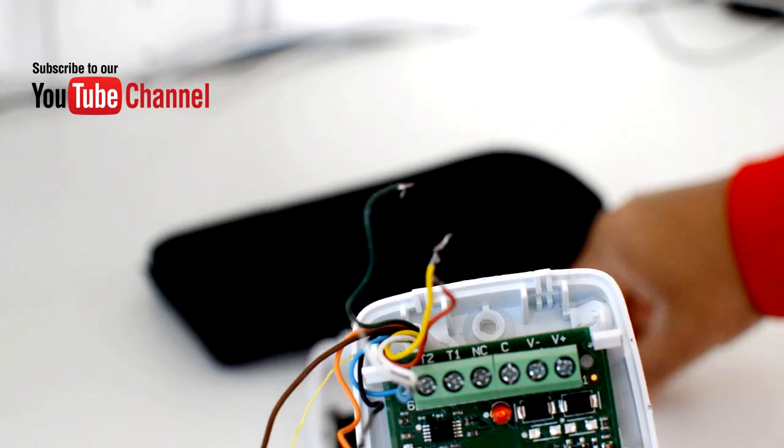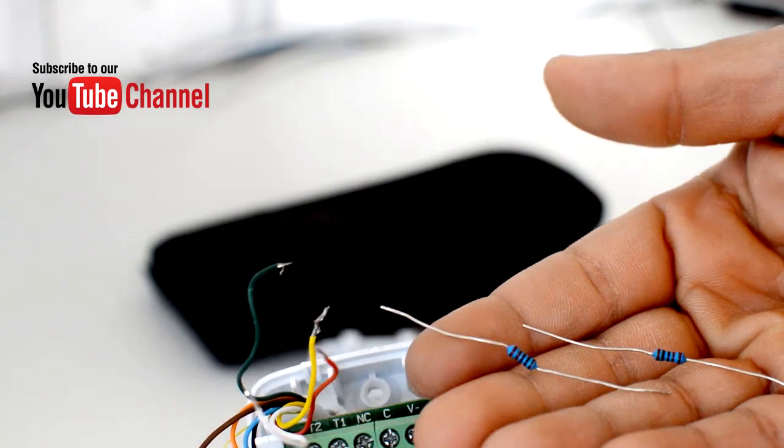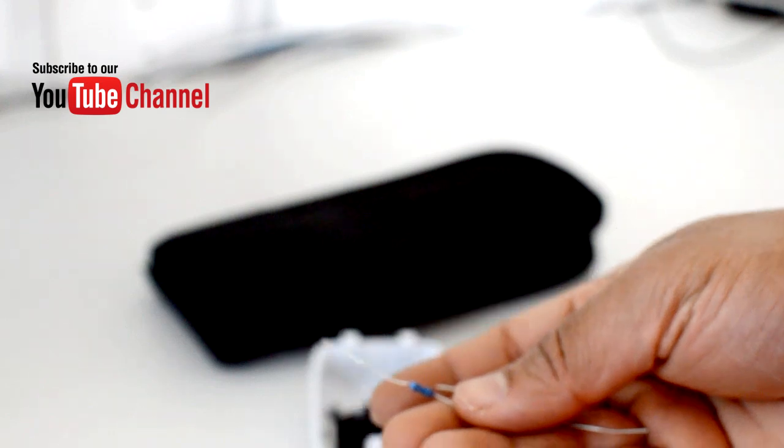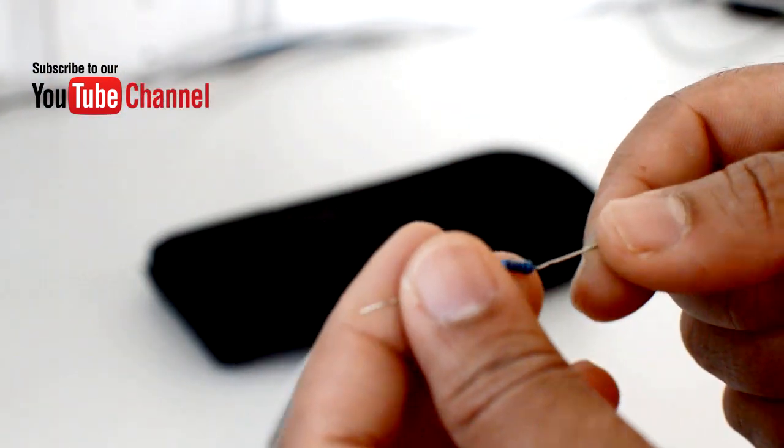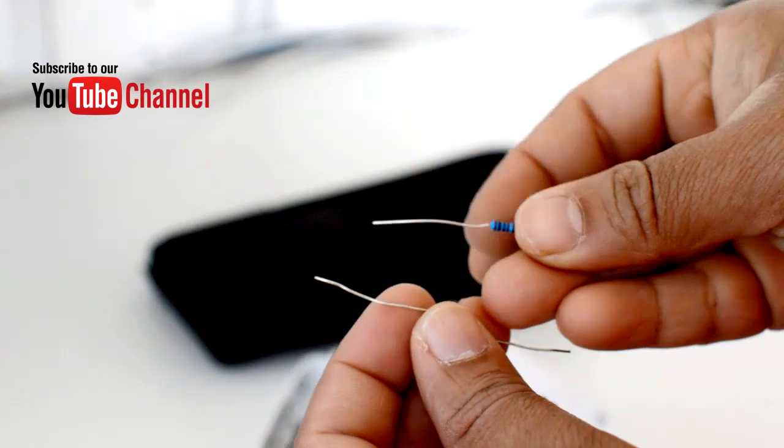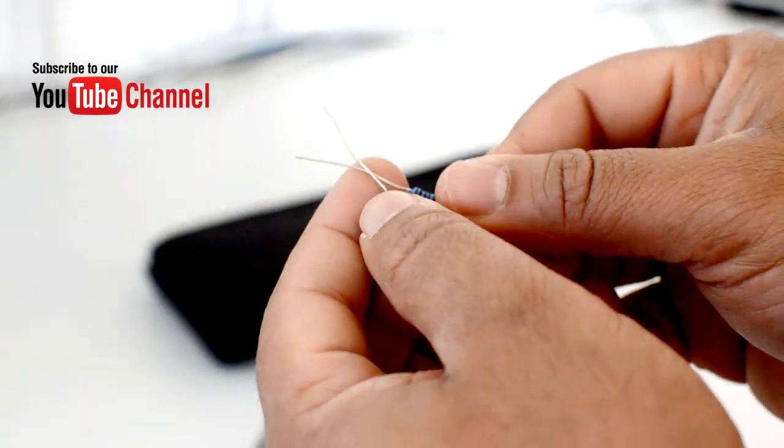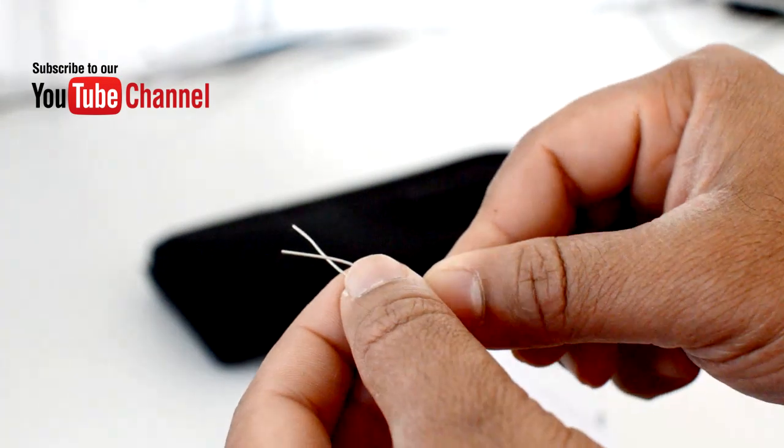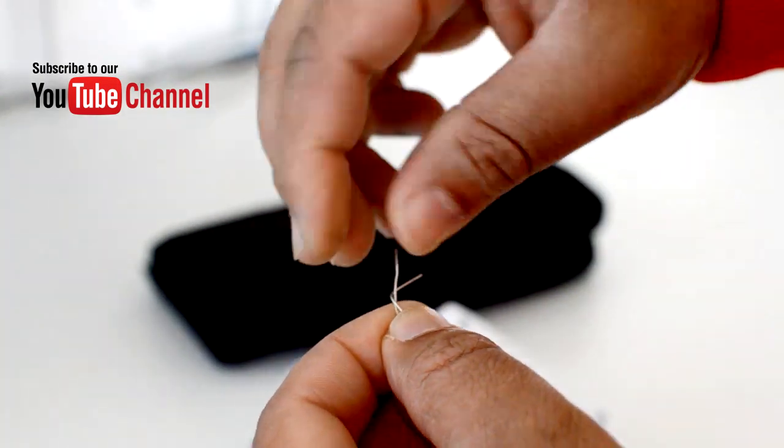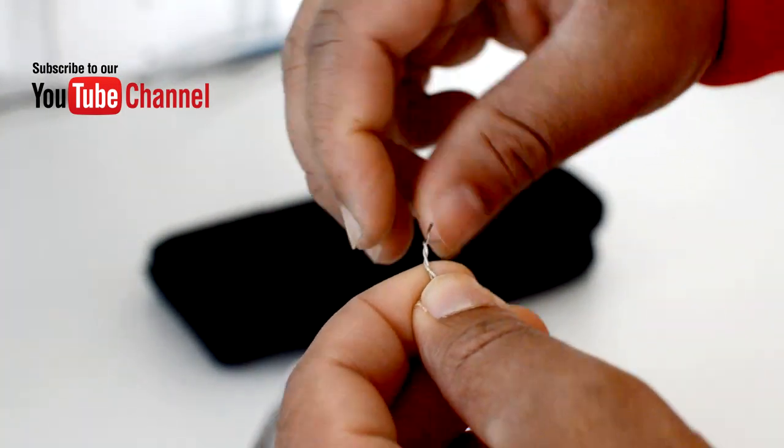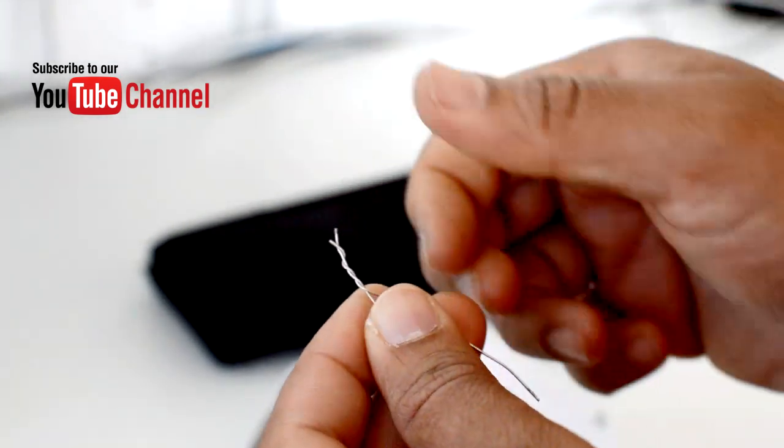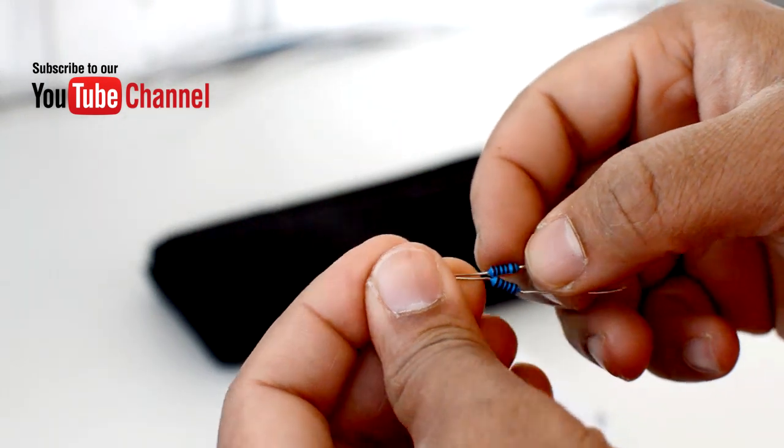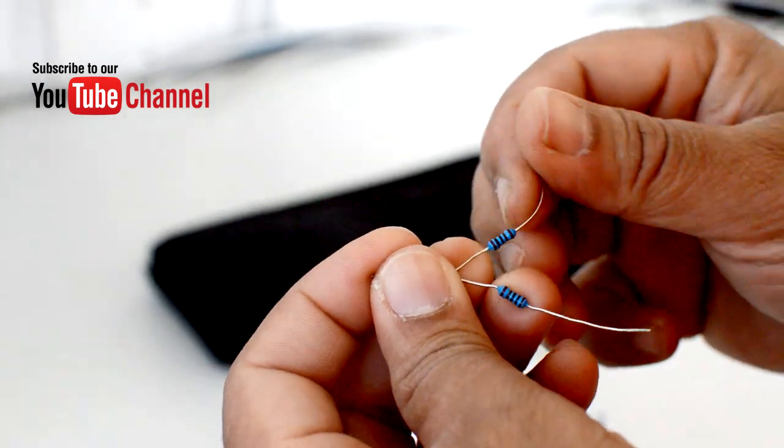What I'm going to do now is join these two resistors. These two resistors, I use one for alarm and one for tamper, and they're 1k each. Now you can buy PIRs with inbuilt resistors. It will be much easier to install them. But what I'm using is a PIR where you need to manually insert resistors.